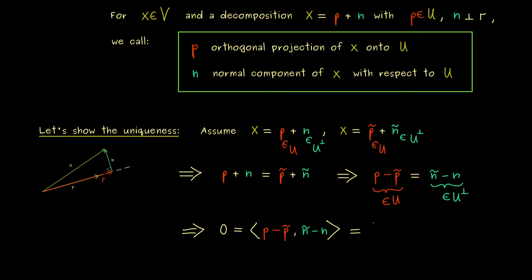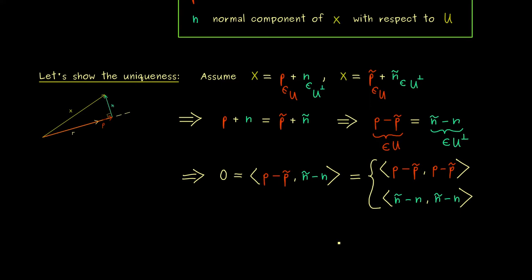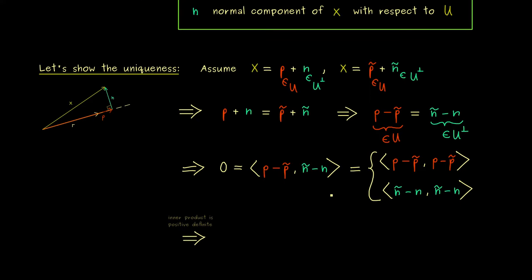However, since we have the equality as well, we get two more equations here. On the one hand we can just substitute the second argument with p - p̃, and on the other hand we can substitute the first argument with ñ - n. And now we see both things are equal to zero and we can use the properties of the inner product. And essentially we just need the first property of the inner product, which states that it is positive definite.